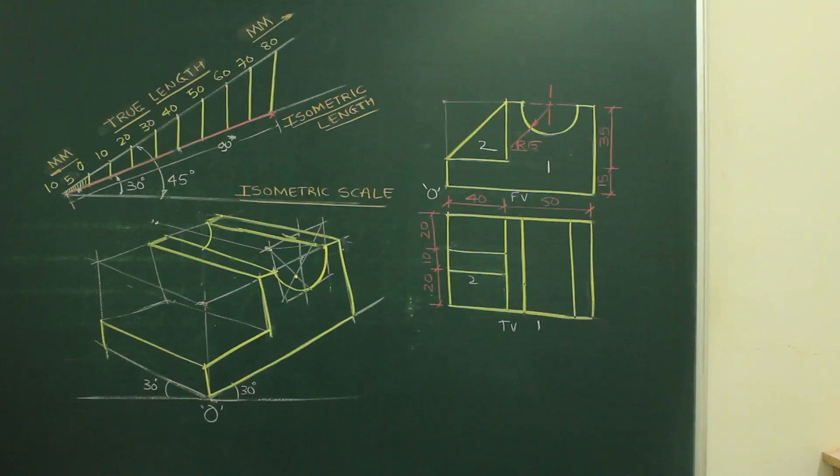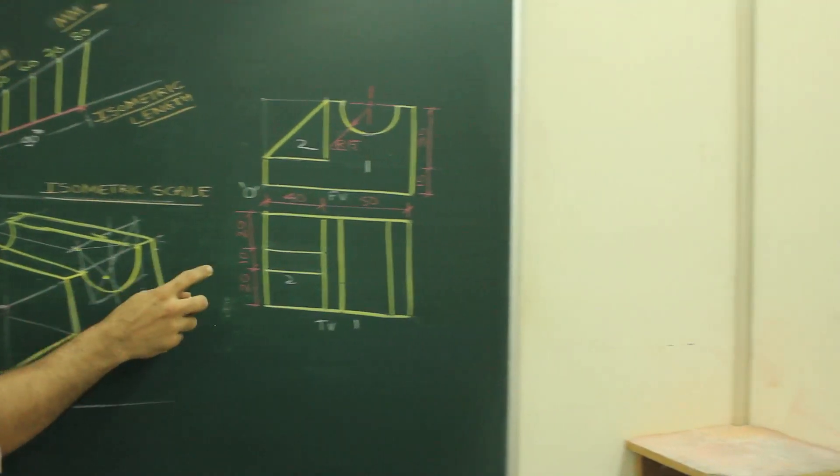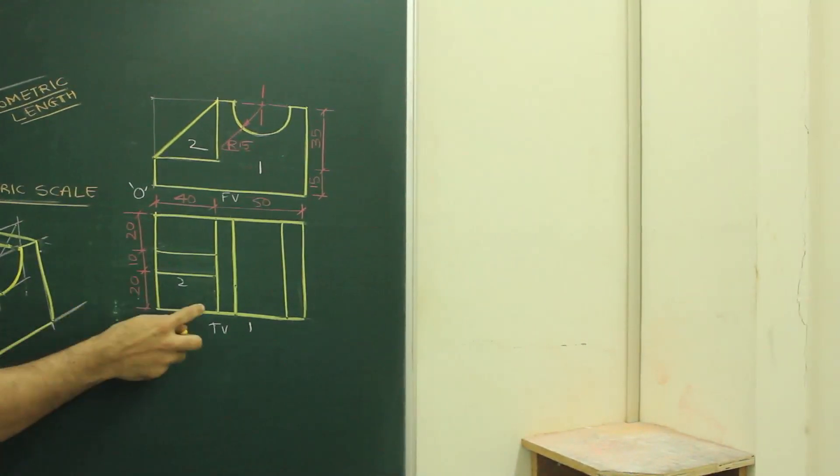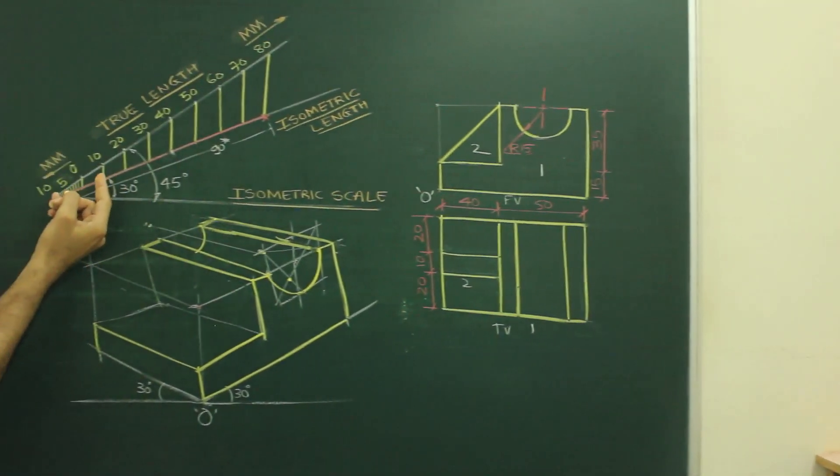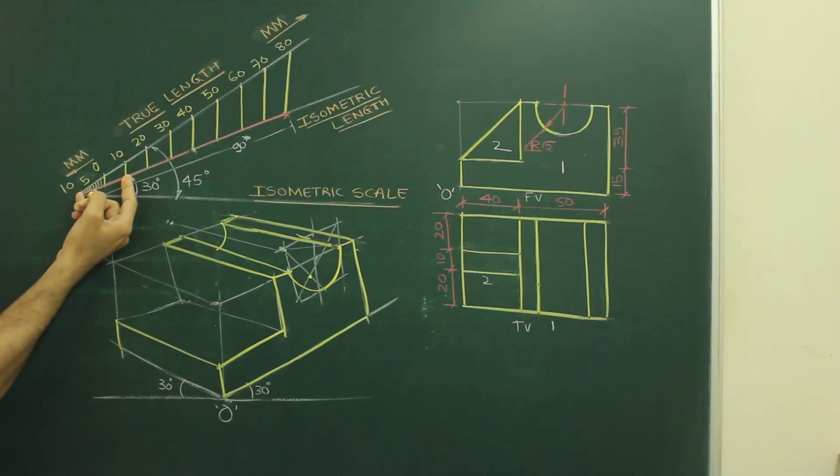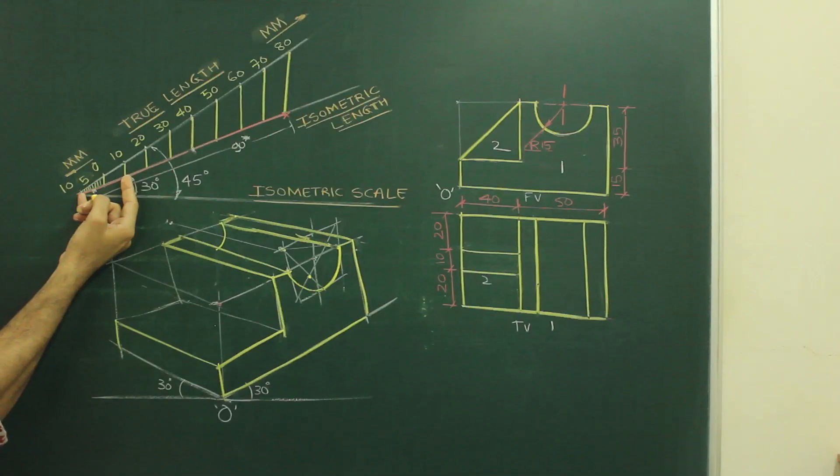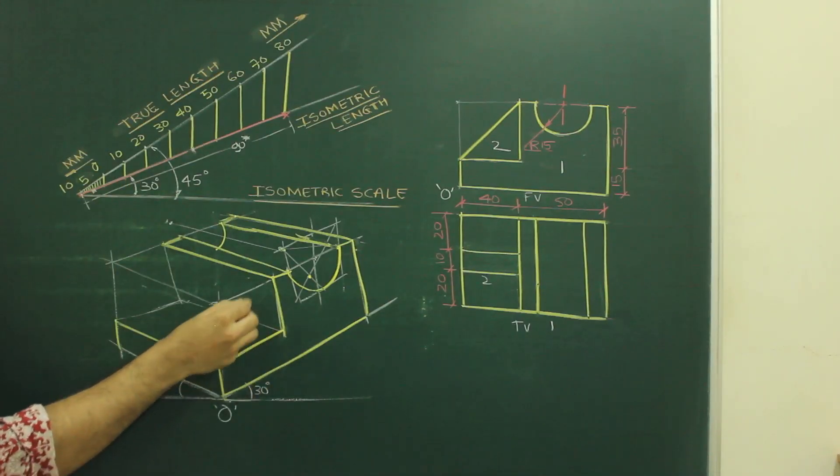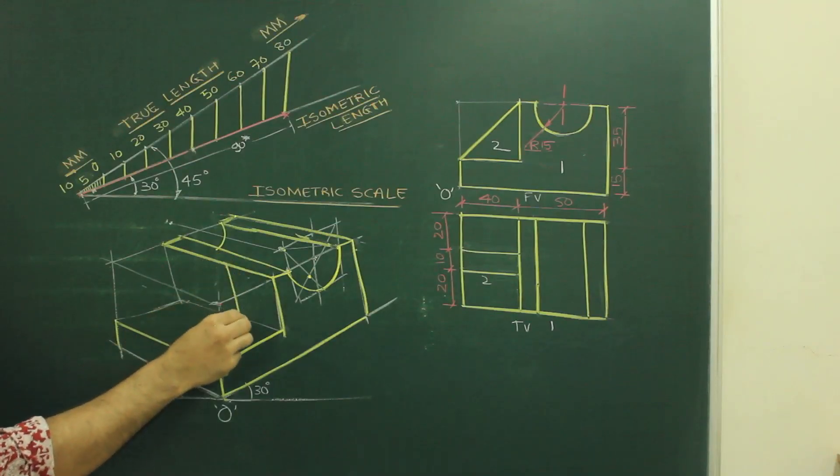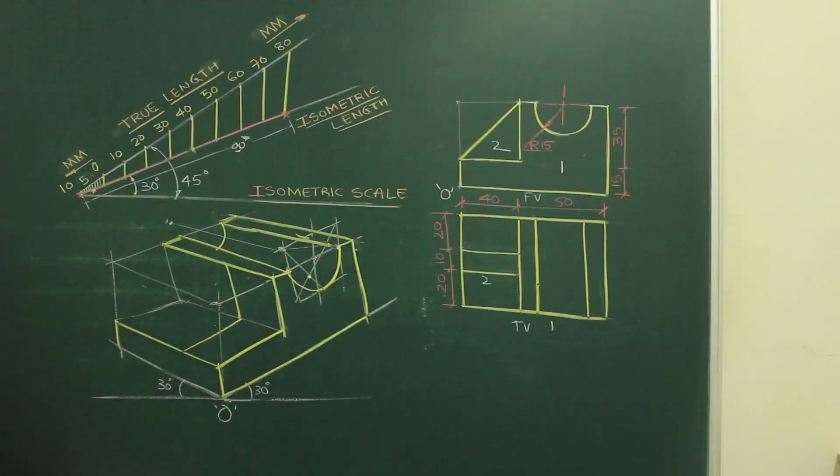Now we need to draw part 2. Now if you see part 2, how much it is behind? If you see top view, you will come to know it is 20 behind. From here, it is going behind by 20. So what we need to do? Again we need to take 20 from this scale. Isometric length. We will take 20 from here. We will cut it off this side as well as this side. And we can draw this. We can join this also.